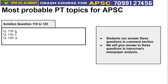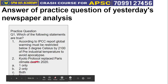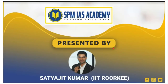This is the answer to questions 118 to 120 from yesterday's newspaper analysis. Today's practice question: the IPCC report states temperature should be kept below 2 degrees Celsius, not 3 degrees Celsius; and the Kyoto Protocol was replaced by the Paris Climate Deal — both statements in the question are wrong, so the correct answer is option D. Students can attempt today's questions and submit answers in the comment section; answers will be provided in tomorrow's newspaper analysis.